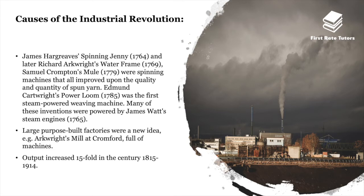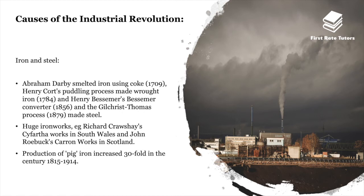Large purpose-built factories were a new idea. Arkwright's mills at Cromford, for instance, were full of machines. Output as a result increased 15-fold in the century between 1815 and 1914.